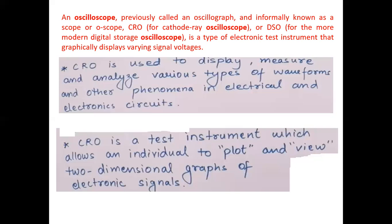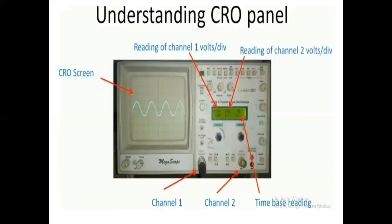CRO is a test instrument which allows an individual to plot and view two-dimensional graphs of electronic signals. It is used to show the graph — that is, a two-dimensional graph — such as the variation of voltage with respect to time. This is the basic definition of the oscilloscope, or CRO.